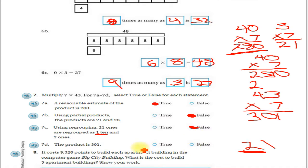And then 7d: we've already found the product. Remember, the product is the answer to a multiplication problem. The product is 301, and we saw here that yes, in fact, when we multiply 7 times 43, we do get 301, so that one's true.